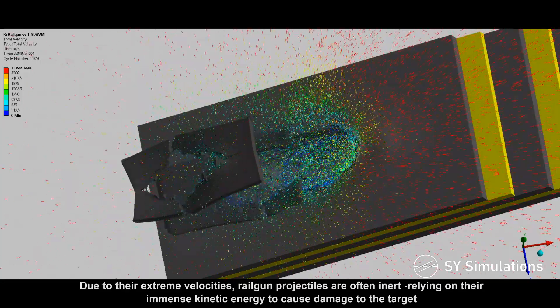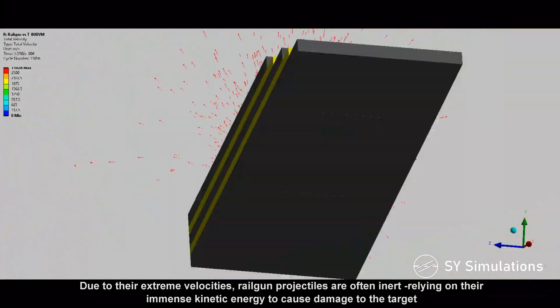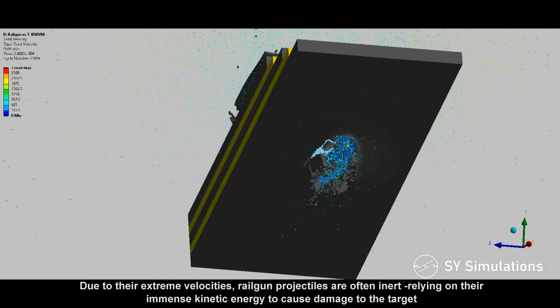Due to their extreme velocities, railgun projectiles are often inert, relying on their immense kinetic energy to cause damage to the target.